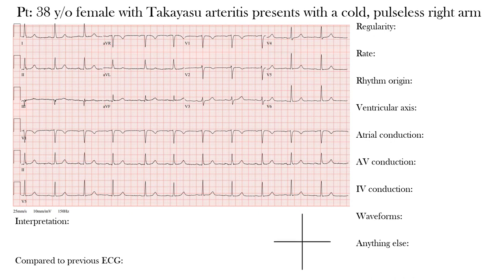Hello, welcome to the EKG Guy and welcome to the EKG of the week. This week's case is a 38-year-old female with Takayasu Arteritis that presents with a cold, pulseless right arm. Her presenting EKG is shown here.